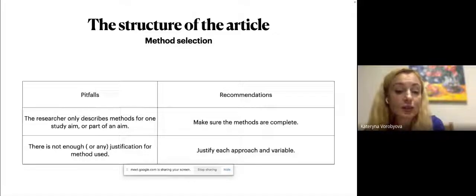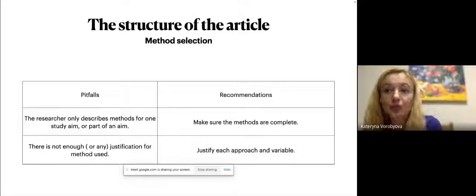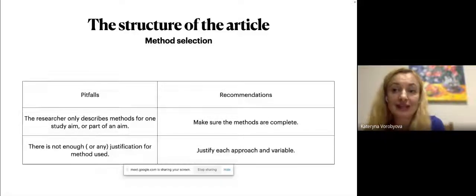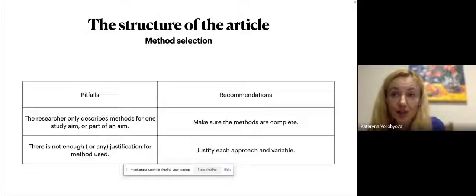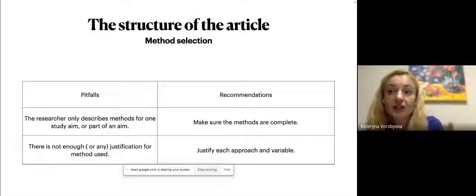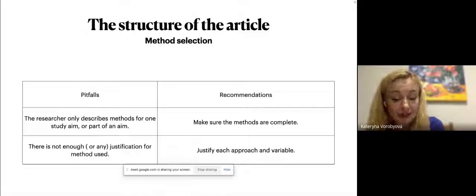Another is there is not enough or any justification for method chosen. So the recommendation could be justify each approach and variable. You must justify your choice of methods because it greatly impacts the interpretation of the results. State the methods you use, and then define the decision. For example, justify why you choose to include the measurement of the variables and statistical approaches.